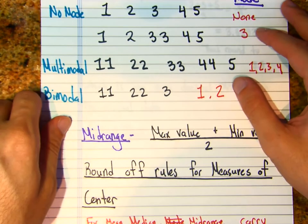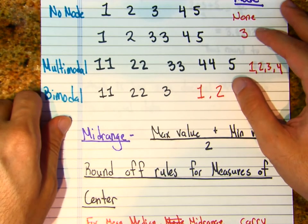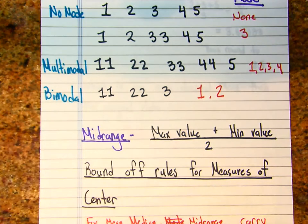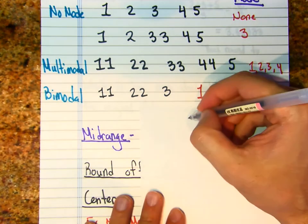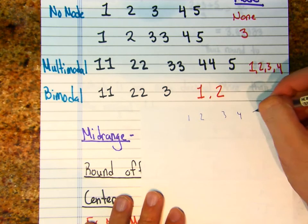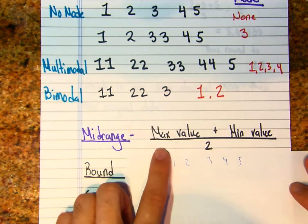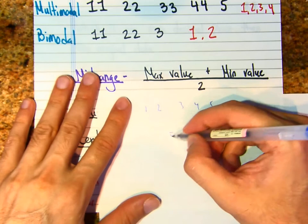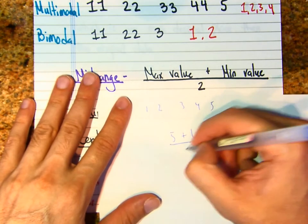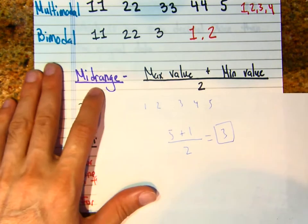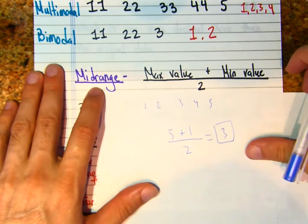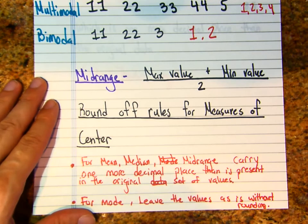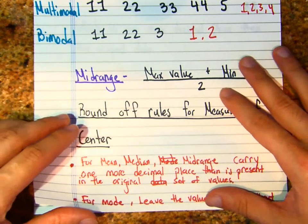The midrange for a set of data values is the max value plus the min value divided by 2. So if I have 1, 2, 3, 4, 5 — what is the midrange? I take the max value plus the min value divided by 2, and the midrange is 3. Like I said, I'm going to go very fast through chapter 3.1 — it's pretty straightforward.